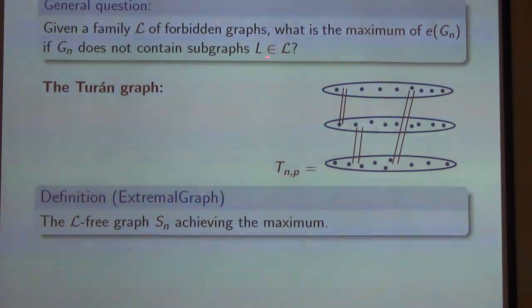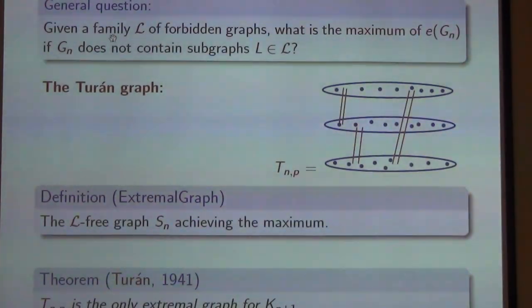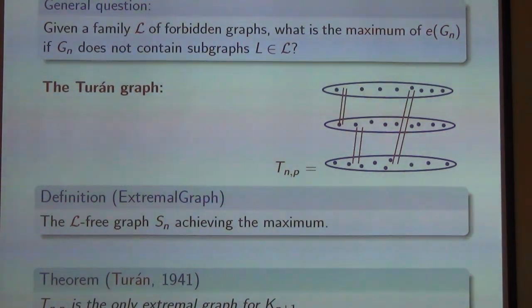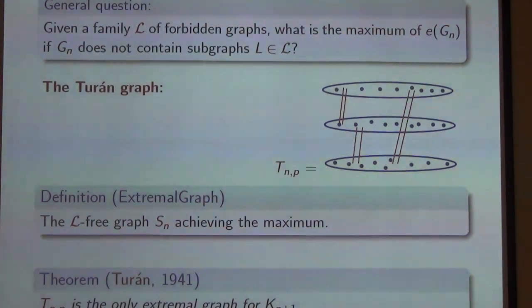Graphs which achieve the maximum — that is, they don't contain any subgraph from the forbidden class — are the extremal graphs. The theory goes back to Mantel, then Erdős in 1938, and Turán in 1941. Turán asked the right questions, and therefore after Turán the whole theory emerged. This is now one of the largest subareas of graph theory.